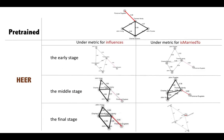Specifically, from the middle stage, HEER can model influences relations precisely. The heterogeneity of the different edge types are modeled well in the final stage.